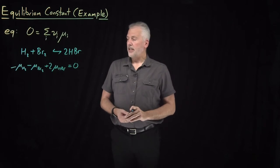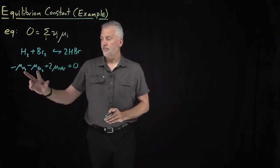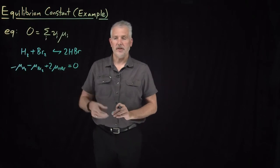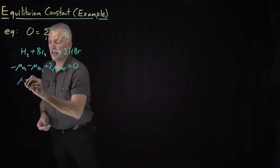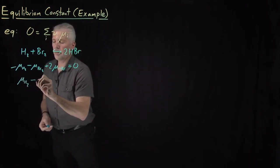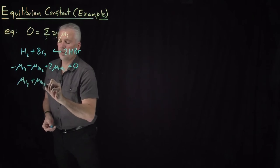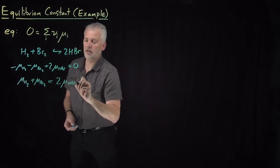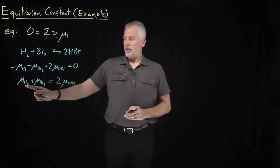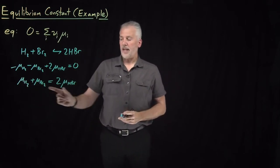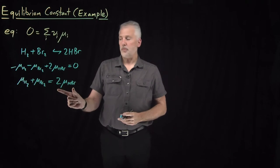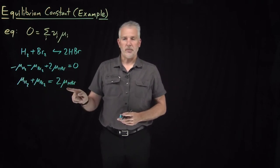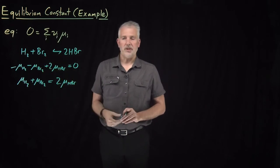Another way of writing that same reaction: let's move reactants and products to opposite sides of the equals sign. So the chemical potentials of H₂ and Br₂ have to add up to twice the chemical potential of HBr. That looks essentially just like this chemical reaction written in terms of chemical potentials rather than chemical species.